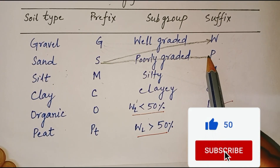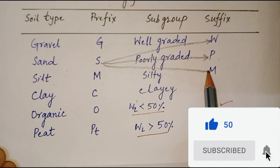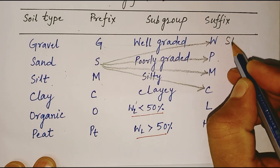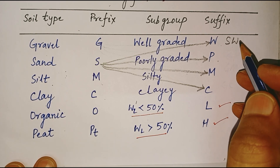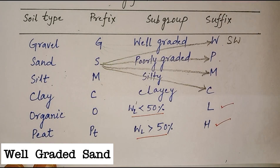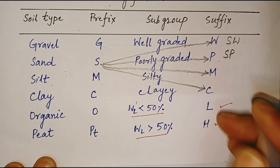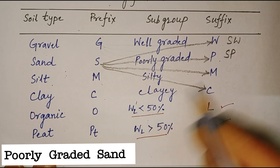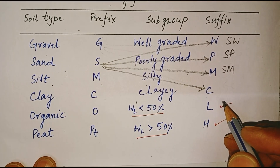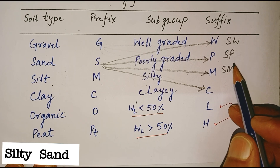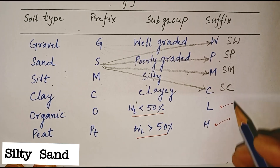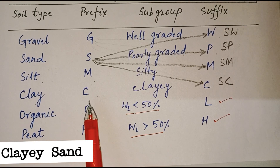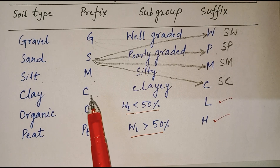Like gravel, sand is also divided into four subgroups: SW, SP, SM and SC. SW means well graded sand, gravelly, little or no fines. SP is poorly graded sand, gravelly, little or no fines. SM is silty sand — a poorly graded sand-silt mixture. SC is clayey sand — a poorly graded sand-clay mixture.